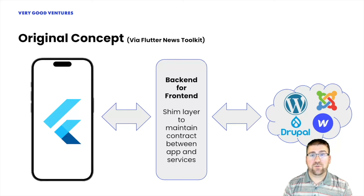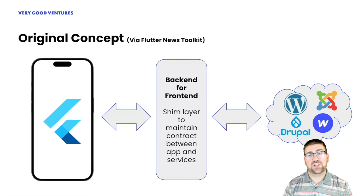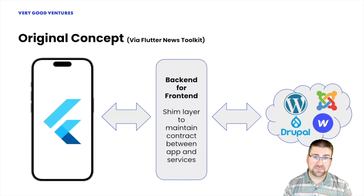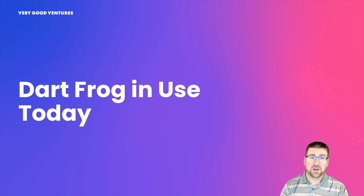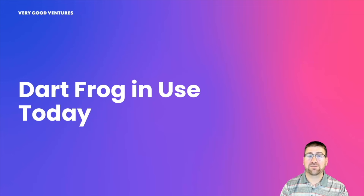This pattern allows for more flexibility for any product, and for some teams it's the key difference in being able to scale — not just to many users, but internally to many teams as well. Given that background, let's talk about how we at Very Good Ventures have been using DartFrog so far. While we do continue to push that backend-for-frontend architecture, some of our project implementations have varied a bit from that original sketch, and the DartFrog framework is flexible enough to provide functionality for all these other use cases.